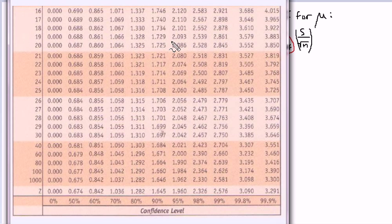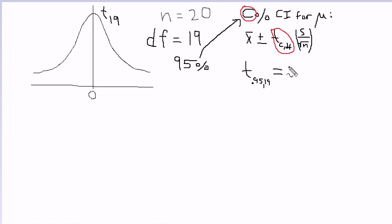So let's go back. Our number was 2.093, so this guy here equals 2.093, and that's what you would place here, along with x-bar, s, and square root of 20 in this case. So that's one way we use the t-table. The other way is in hypothesis testing.